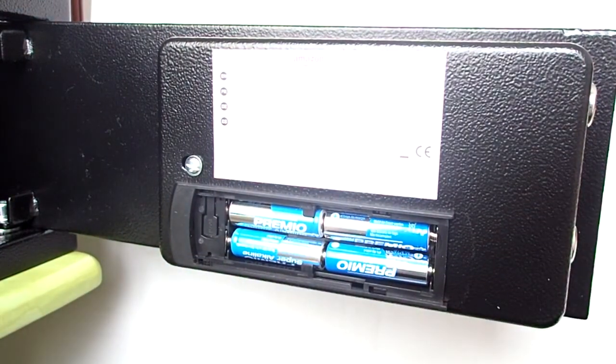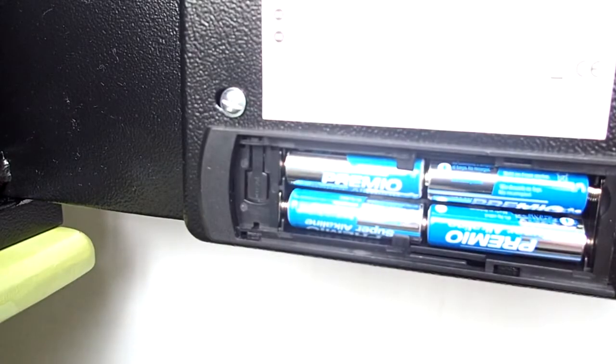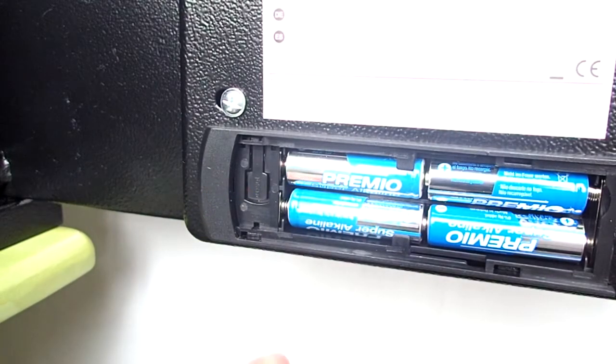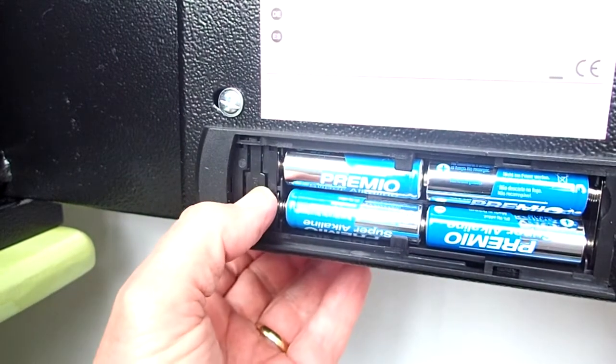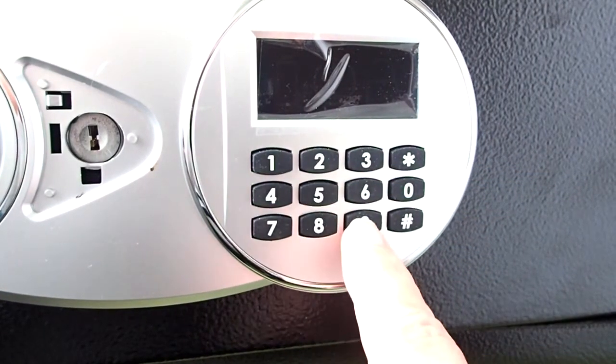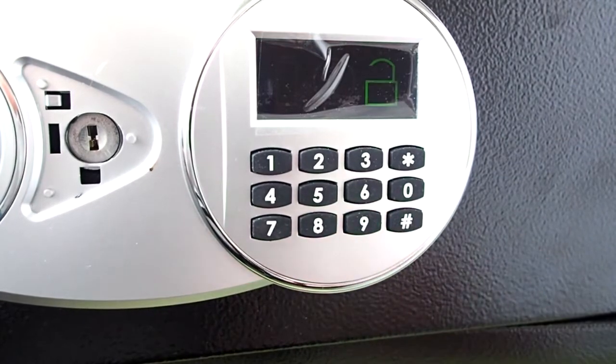you will hear one short sharp beep. With the door open, press the reset button here. The safe will then emit two beeps. Now enter a passcode. The passcode can be between three to eight digits. Then press the pound key to confirm.